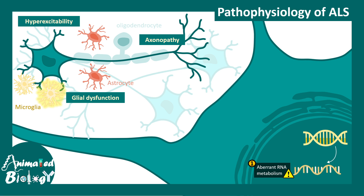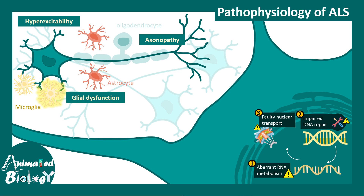One of the key things noticed inside the neuron in ALS is aberrant RNA metabolism. Several mutations associated with ALS affect this RNA metabolism pathway. Not only RNA metabolism, but the DNA damage repair system is also abrogated in ALS. Additionally, the mRNAs generated in the nucleus are not properly transported to the cytoplasm — there is faulty nuclear transport.